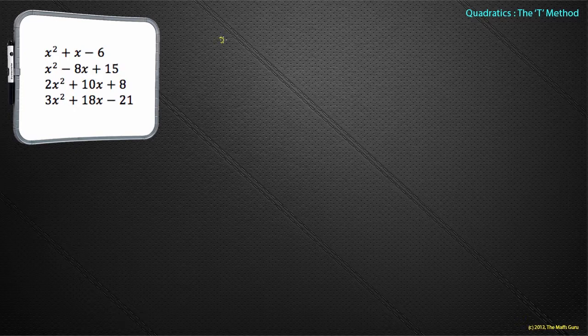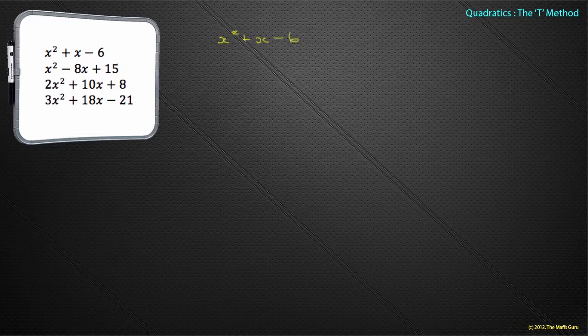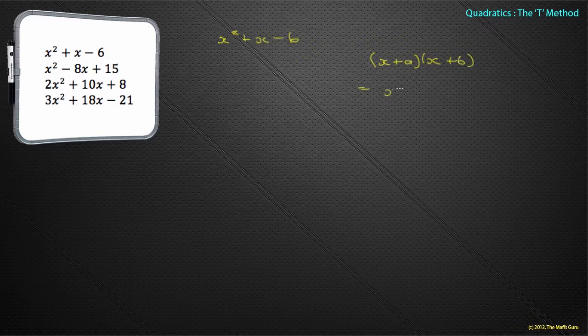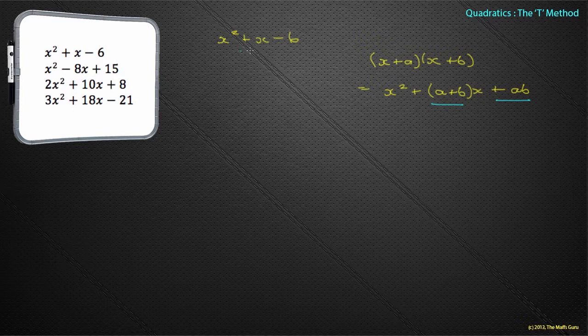Let's start with x² + x - 6 and recap the knowledge we had in our previous video. We came up with the idea that when we had something of the form (x + a)(x + b), that would become x² + (a + b)x + ab. Or the value in front of the x is equal to a + b, and the value at the end, the constant, is equal to a × b. So if we apply that to our knowledge here, what do we find? Well, the number in front of the x is 1, so we know that a + b = 1, and we know the number at the end is -6, so a × b = -6.